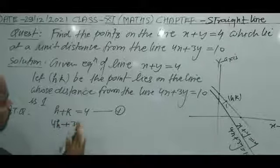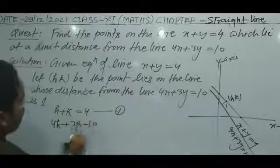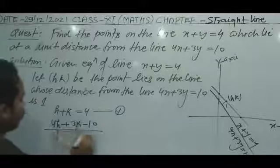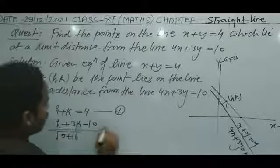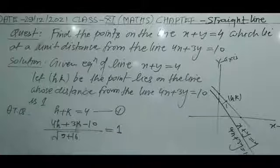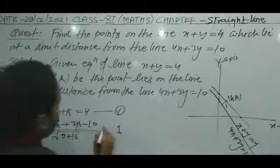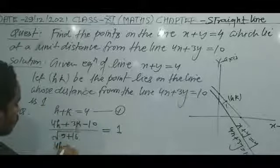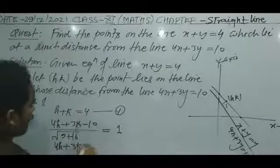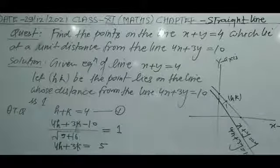The distance of point (h, k) from the line 4x plus 3y equal to 10 is given by |4h plus 3k minus 10| divided by root over 9 plus 16, which equals 1. So 4h plus 3k minus 10 divided by 5 equals plus or minus 1, giving 4h plus 3k minus 10 equal to plus or minus 5.